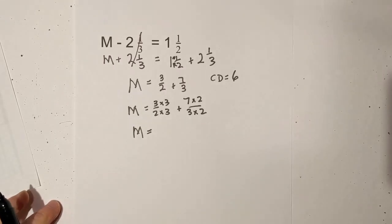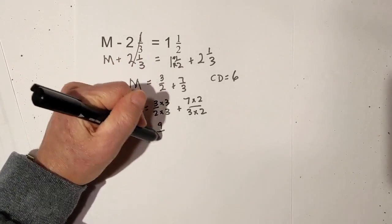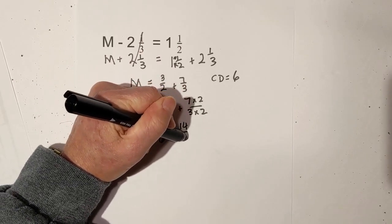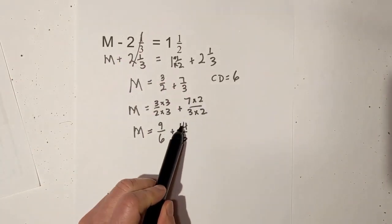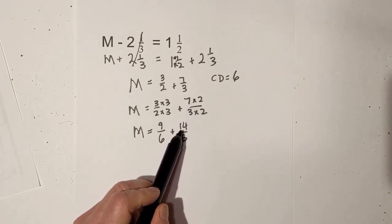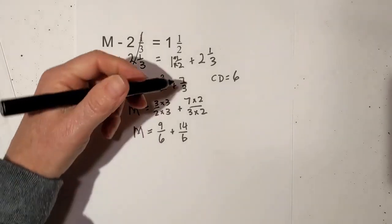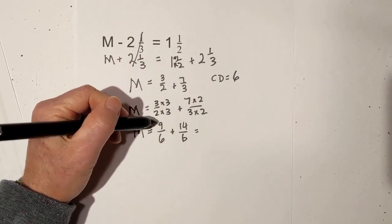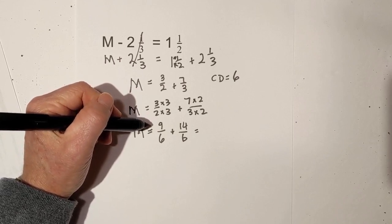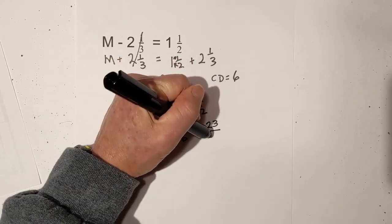I'll bring it down one more time. That is 3 times 3 is 9 over 6, plus 14 over 6 because 7 times 2 is 14. Let's make sure we see where we get these numbers. 7 times 2 is 14, 3 times 3 is 9, and then we have 6. All we do is add them. 9 plus 14 is 23 over 6.